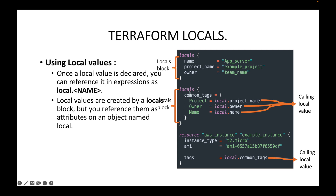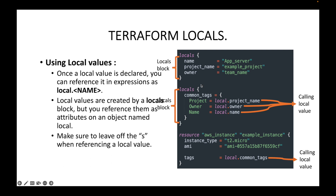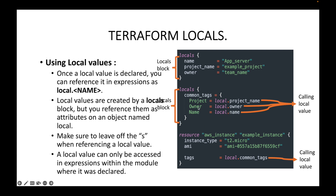Local values are created by a locals block, but you reference them as attributes on an object named local. When declaring, you use the plural — locals — but when calling or referencing, you use the singular — just local dot the local name. You have to leave off the 's' whenever you are referencing the local value.